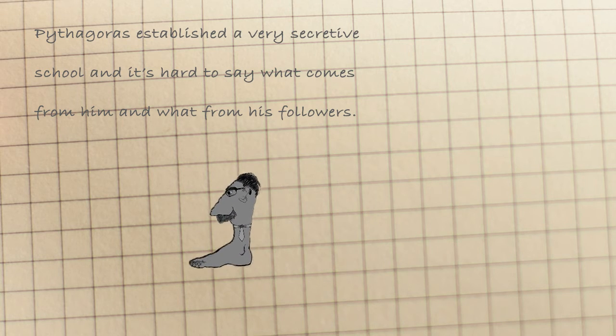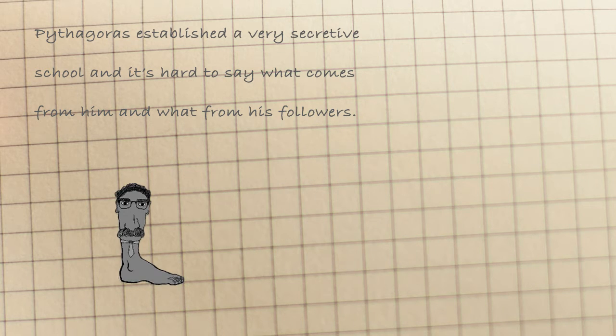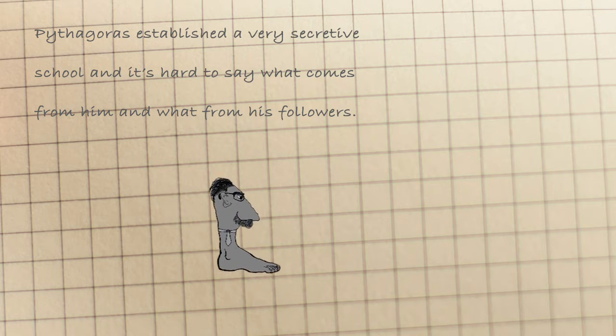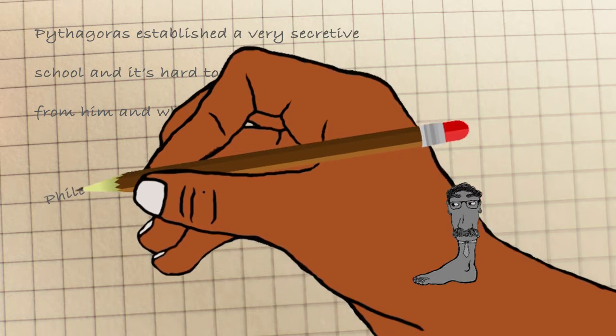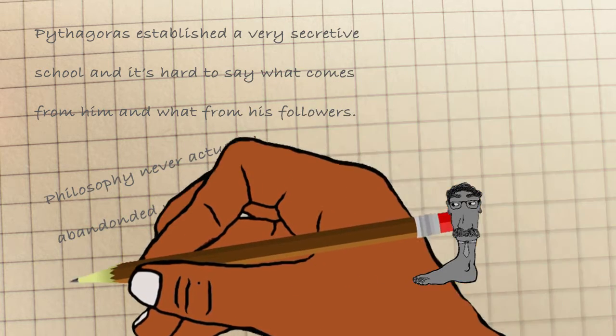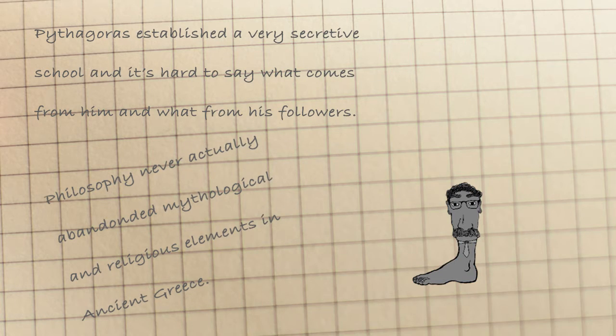Now, in the previous videos we talked about how philosophy emerges against mythology with abstract thinking, arguments and all of that. But Pythagoras and his school show us how philosophy never actually abandoned mythological and religious elements in ancient Greece.